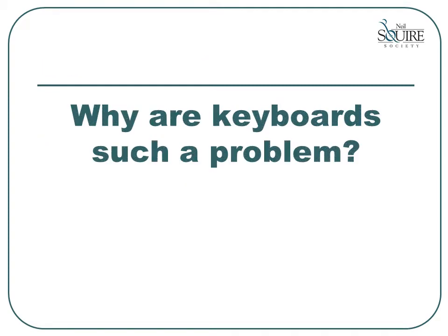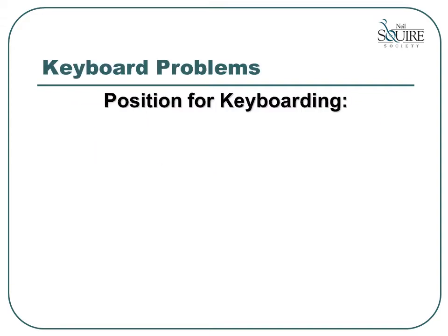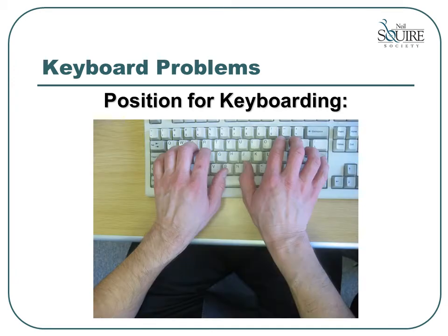The first topic we are going to cover is why keyboards are such a problem. In this next picture, we show you the positioning of your hands and wrists for keyboarding. As you can see, the hands are lifted and the wrists are twisted to the side. We need to be aware that the layout and design of the keyboard is based on the old typewriter. The layout for the typewriter was designed in 1860. The keys were organized in order to slow a typist down and minimize key jams. At the time, body positioning and ergonomic principles were not considered.